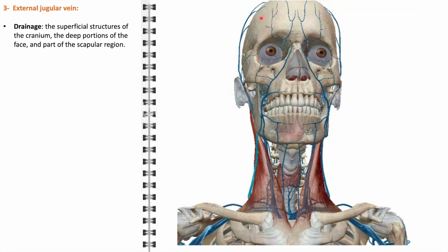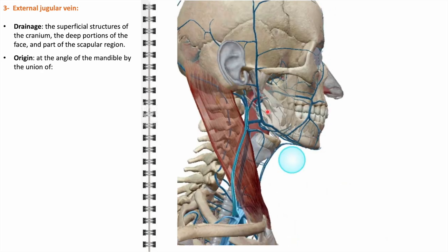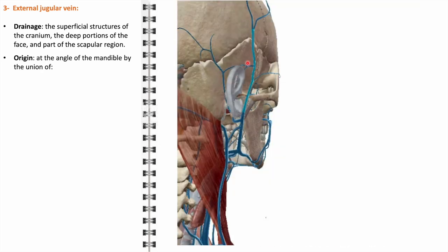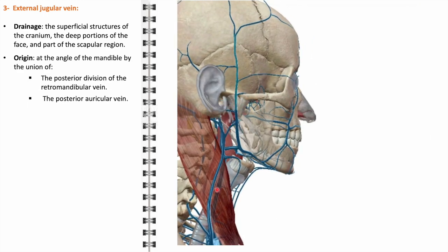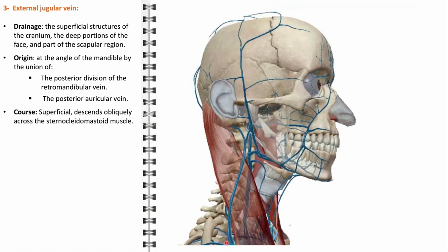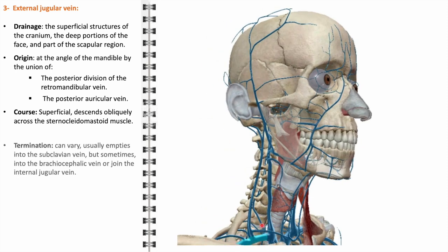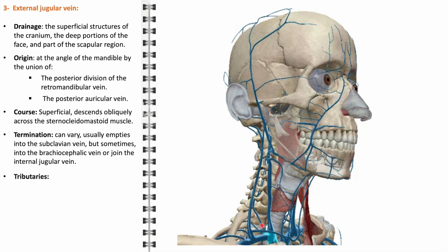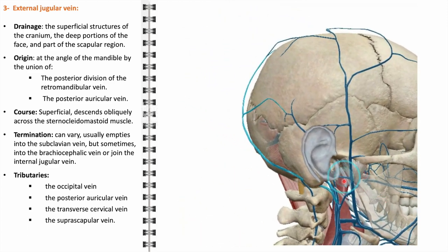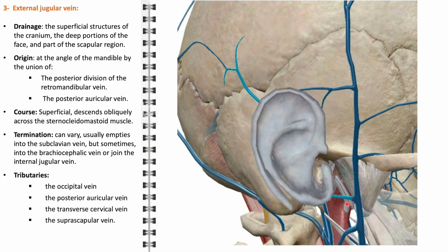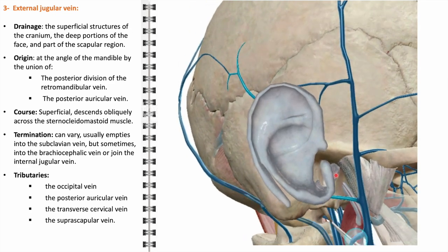The external jugular vein plays a key role in the venous drainage of the head and neck. Unlike the deeper internal jugular vein, the external jugular vein predominantly drains the superficial aspects of these regions, including the superficial structures of the cranium, the deep portions of the face, and part of the scapular region. This vein originates at the angle of the mandible, formed by the confluence of the posterior division of the retromandibular vein and the posterior auricular vein. Its predominantly superficial course makes it visible in many individuals as it descends obliquely across the sternocleidomastoid muscle.